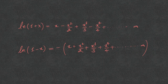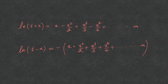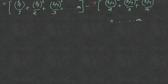Now, we know that the expansion of log(1 + x) is x minus x squared over 2 plus x cubed over 3 minus x to the power 4 over 4, plus so on up to infinity. Similarly, log(1 minus x) is minus of x plus x squared over 2 plus x cubed over 3 plus x to the power 4 over 4, plus so on up to infinity. Using these expansions, before applying them I use one manipulation.